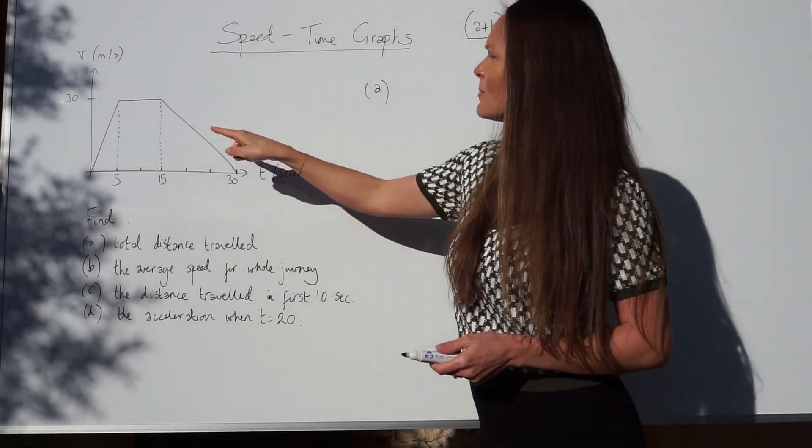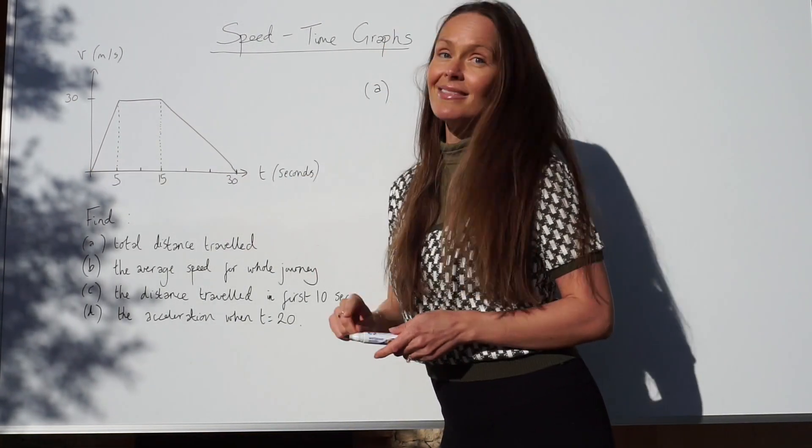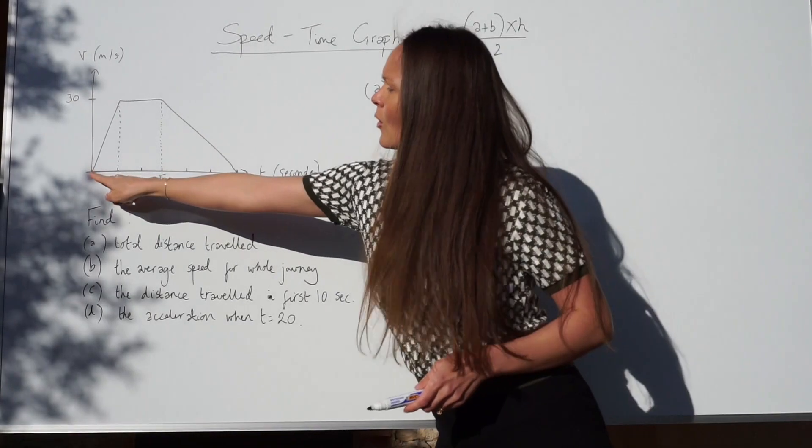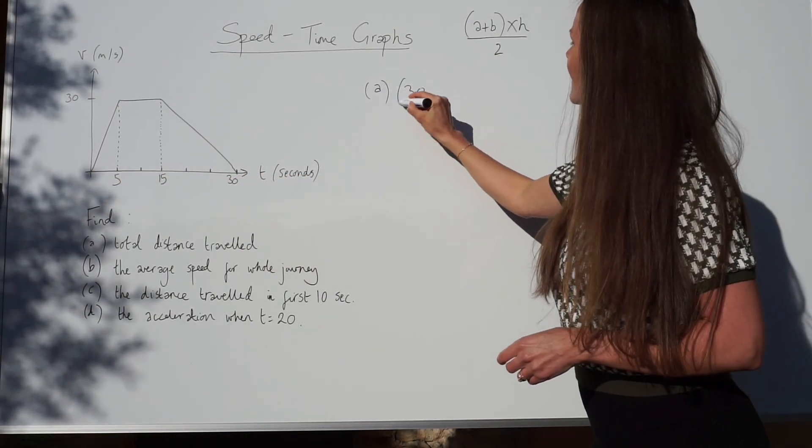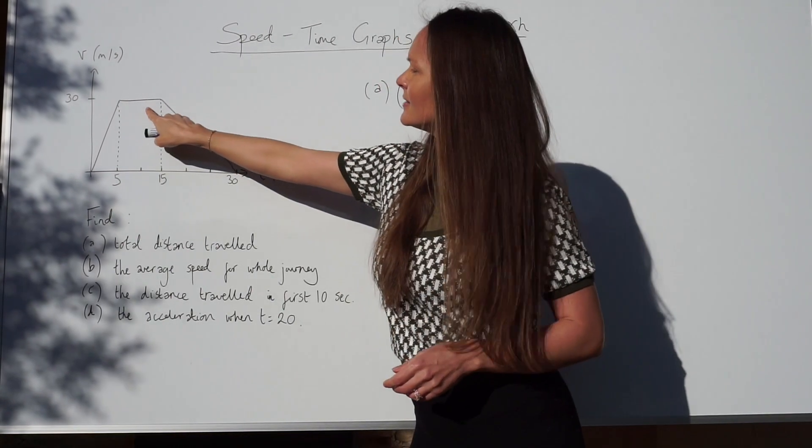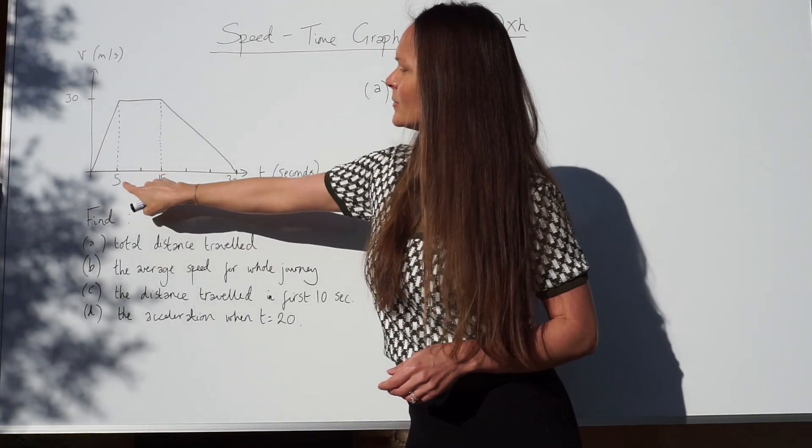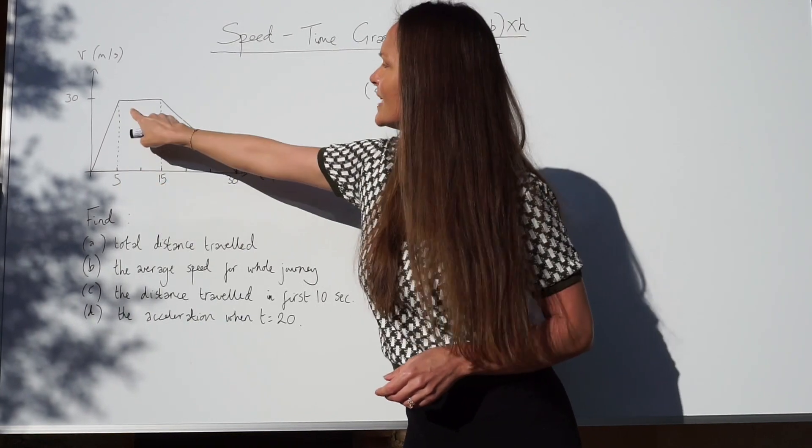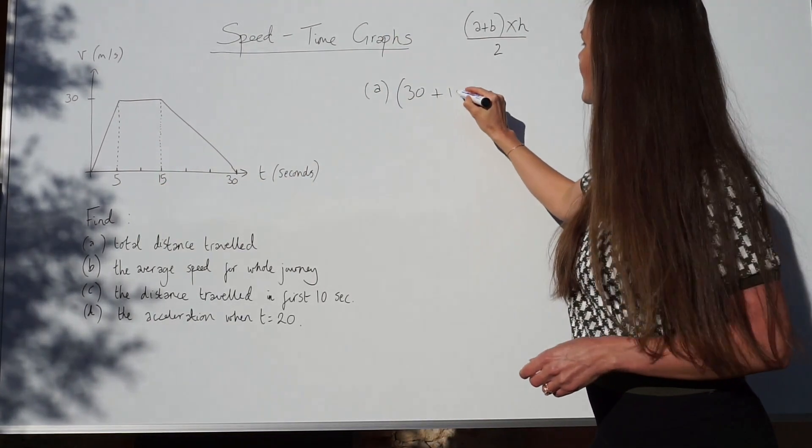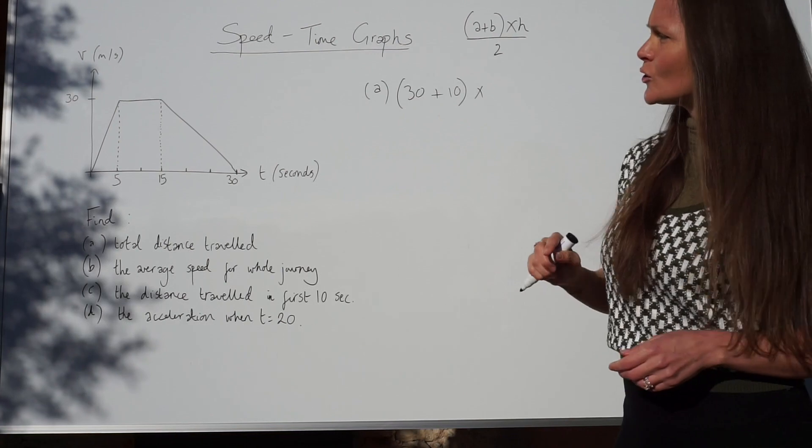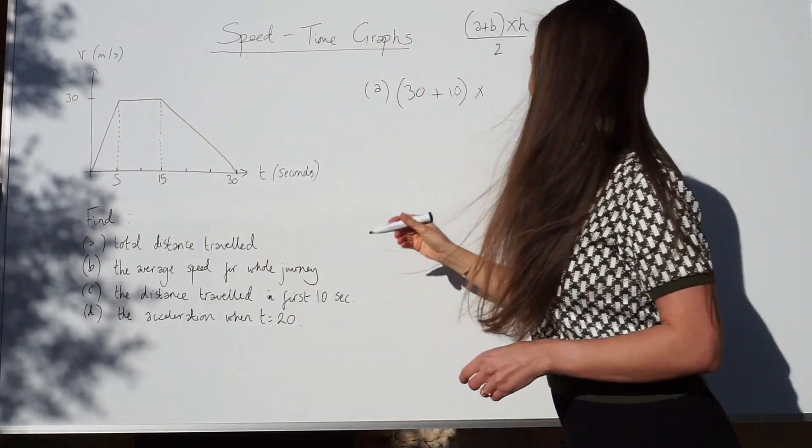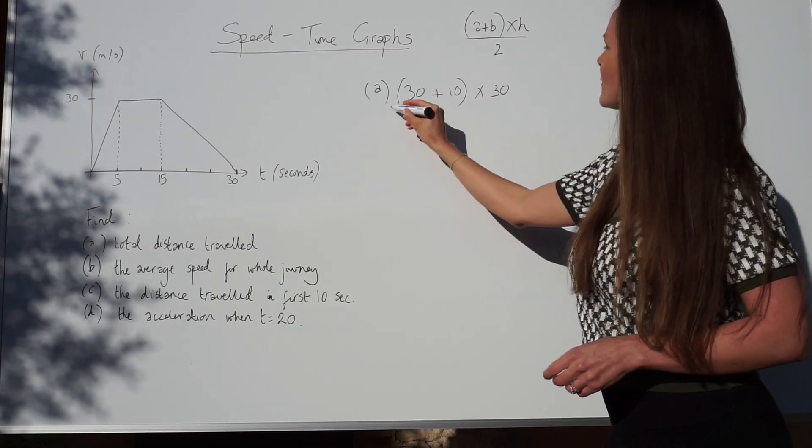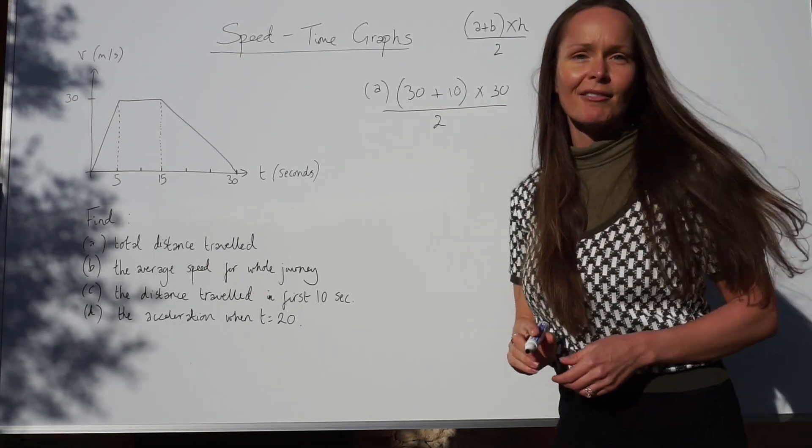If I add the two parallel sides together in this trapezium, the length of the base here is 30. And the length of this parallel side here is 10, because the difference between 5 and 15 is 10. So, first you add those together. Next, you multiply by the height, which is 30.